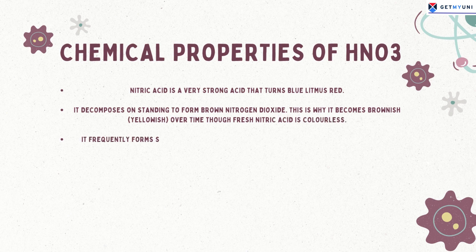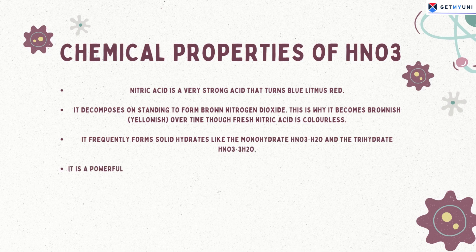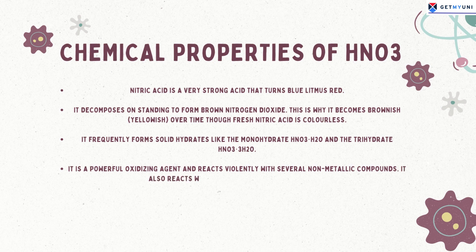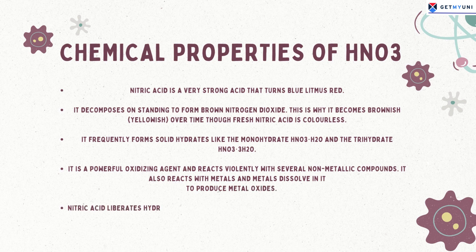Though fresh nitric acid is colorless, it frequently forms solid hydrates like the monohydrate and the trihydrate. It is a powerful oxidizing agent and reacts violently with several non-metallic compounds. It also reacts with metals, which dissolve in it to produce metal oxides. Nitric acid liberates hydrogen gas with metals above hydrogen (element zero) in the metal activity series.